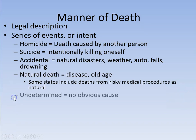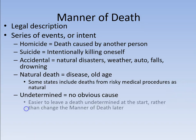And then finally there's undetermined — there's no obvious cause. What happens in many cases is that after the first autopsy and initial findings, they can leave the manner of death as undetermined, and then with more information and more autopsy work, they can change it to one of the other categories.